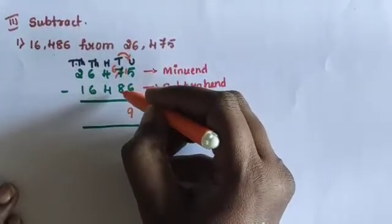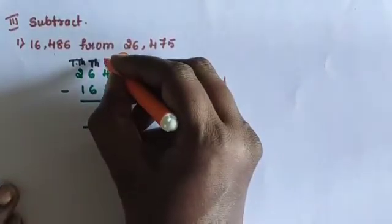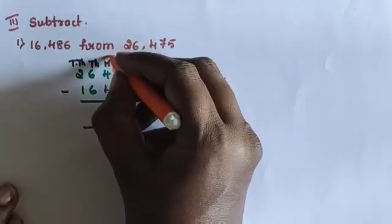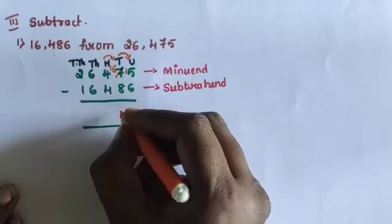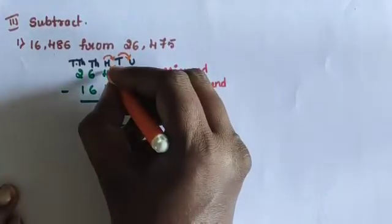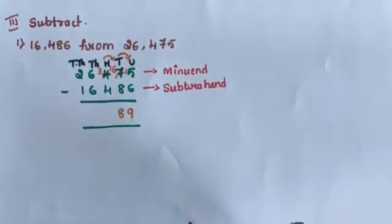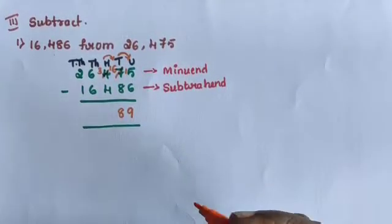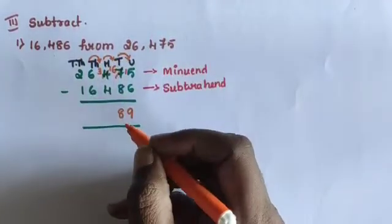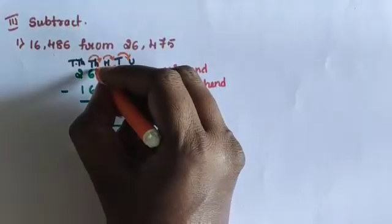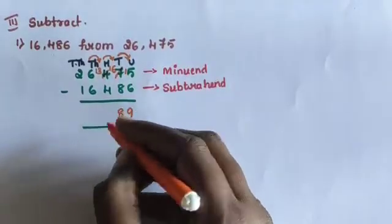Subtract in the tens place: 6 minus 8. Since 6 is less than 8, take a carry from the hundreds place. Make it 16. Then the remaining in the tens place is 3. 3 minus 4: since 3 is smaller than 4, take a carry from the thousands place. Make it 13. 13 minus 4 equals 9.